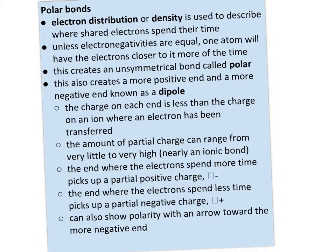A polar bond means there are two poles — a positive end and a negative end. We also refer to it as a dipole. The charge on each end is less than the charge of an ion where an electron has actually been transferred, so we refer to it as a partial positive or partial negative charge, using the delta symbol. The amount of partial charge can range from very little to nearly ionic, depending on the difference in electronegativity. The end where electrons spend more time picks up a partial negative charge, and the end where they spend less time picks up a partial positive charge.